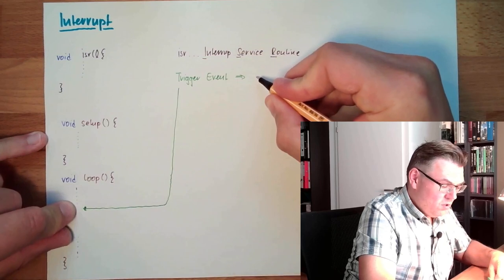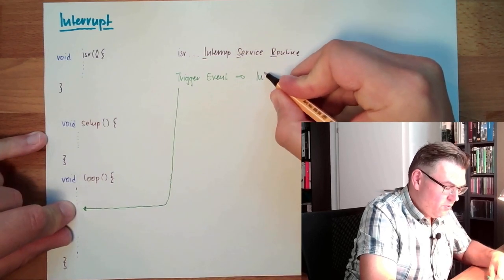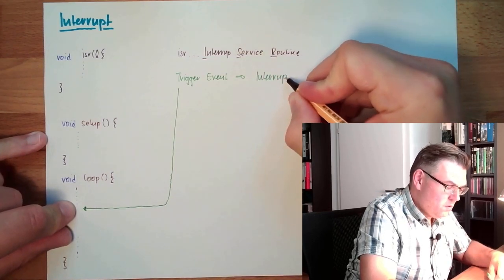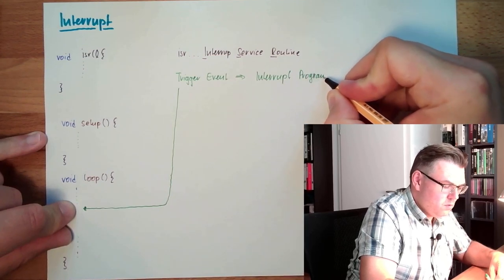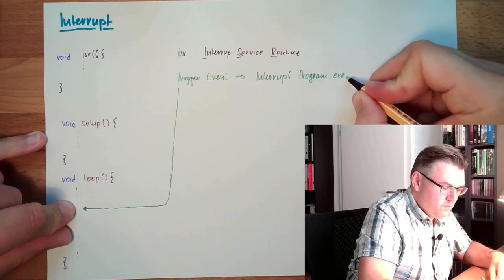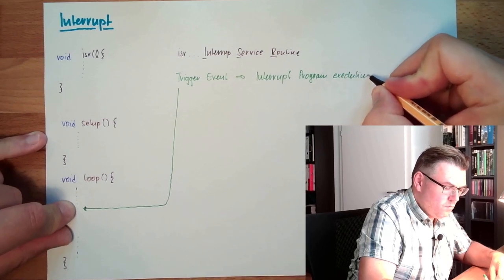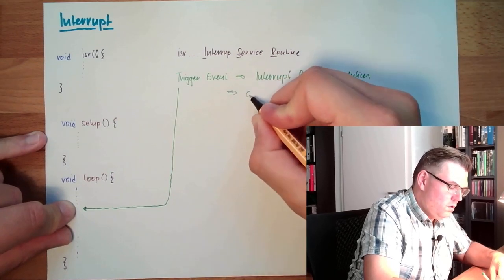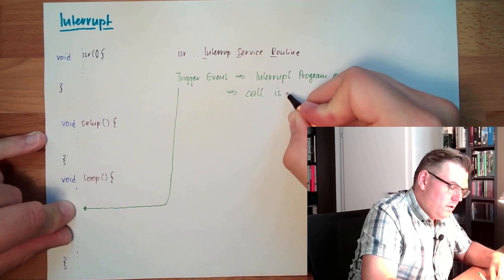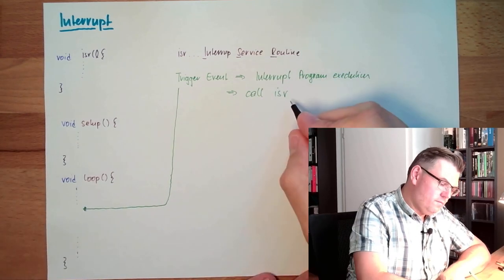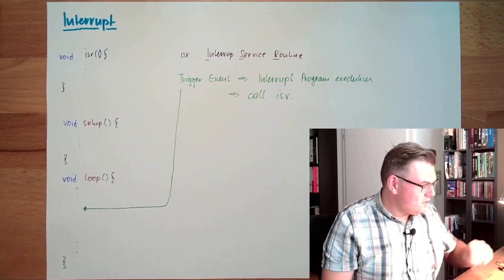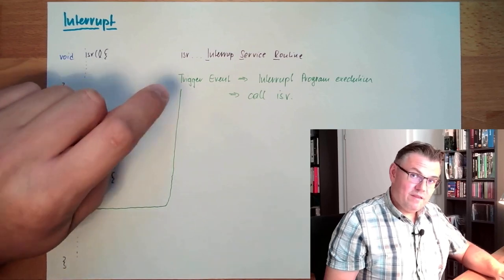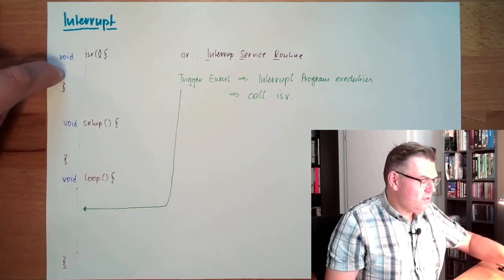When we are triggering this event, we immediately call, we interrupt program execution and call the interrupt service routine. Whenever this trigger event appears, we immediately call this ISR.